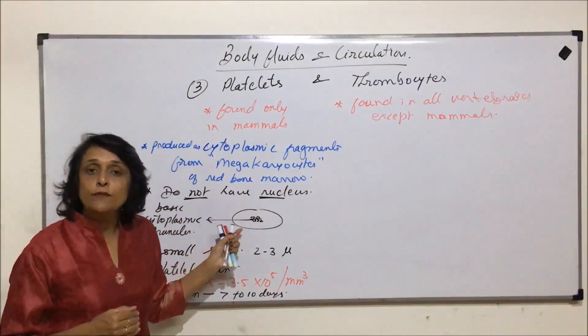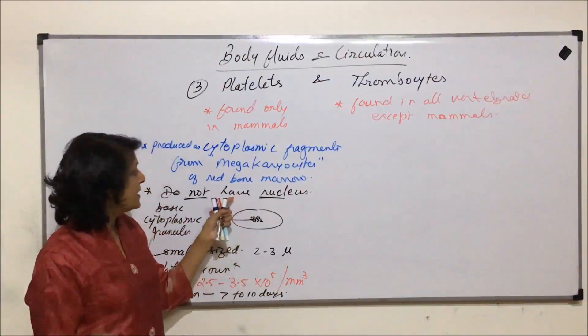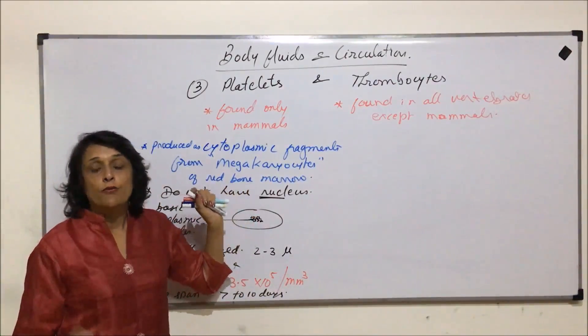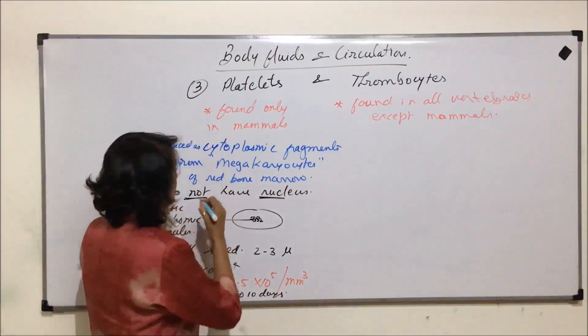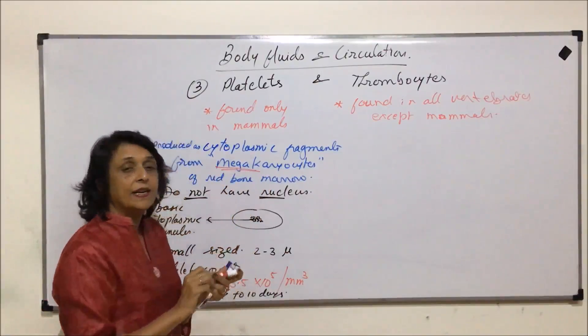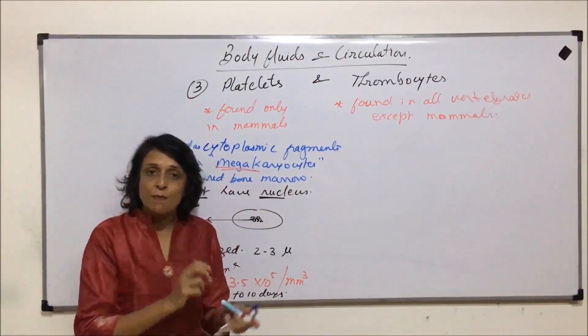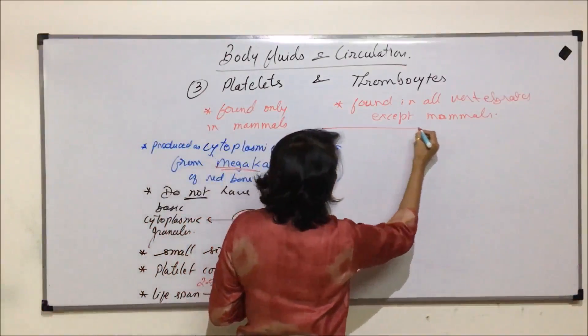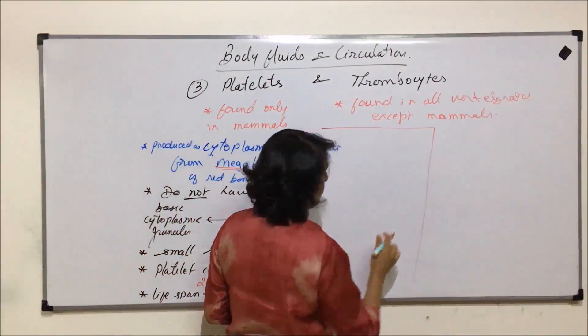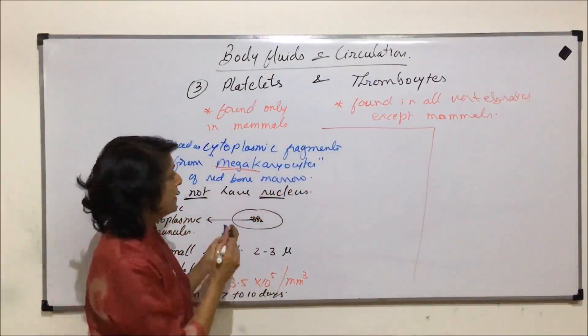So production of platelets is taking place in red bone marrow from the giant cells which are known as megakaryocytes. And these platelets are formed as a fragment of these cells. Let us also talk about a few more important things and then we will see what thrombocytes have.